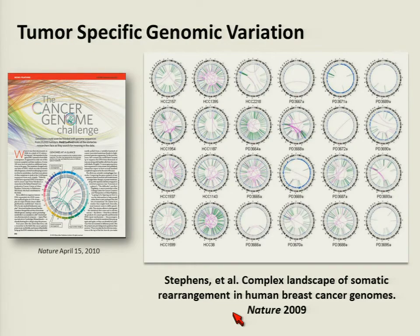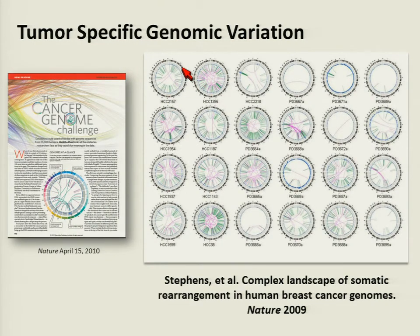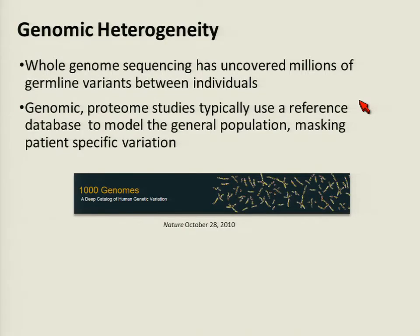There is widespread tumor genomic variation, even within the same tumor type. This graphic shows 24 different breast cancer tumors, with chromosomes arranged around a circle for a genome-wide view. Lines represent genetic reassembly — recombination resulting in fusions, deletions, and duplications that can also be present in the proteome. Additionally, whole genome sequencing studies such as the 1,000 Genomes Project have uncovered millions of germline variants between individuals. I'm stressing this genomic heterogeneity because many genomic and proteomic studies use a reference database that masks patient-specific and tumor-specific variation.